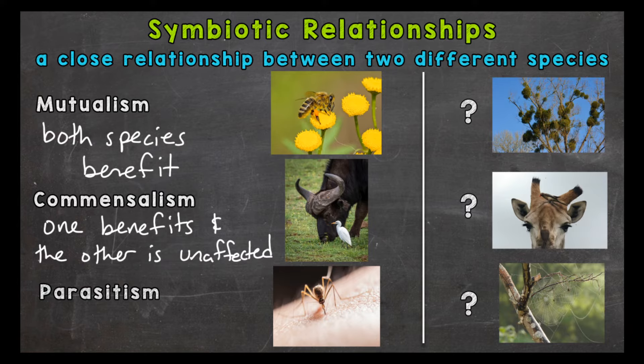In that case the relationship would become mutualistic because the grazing animal is benefiting from the cattle egret and the cattle egret is benefiting from the grazing animal. So there can be some debate when it comes to commensalism — it may not be as clear cut sometimes as mutualism and parasitism.